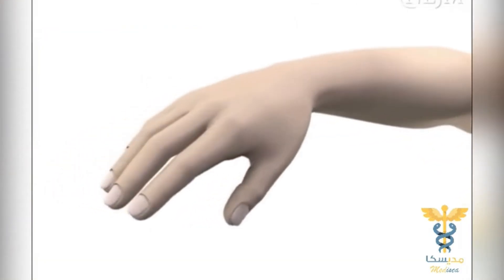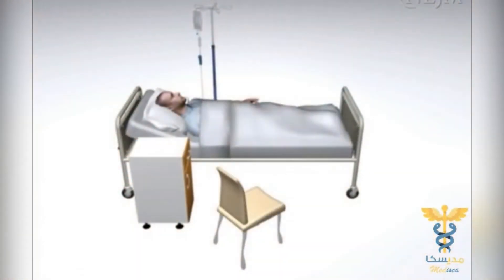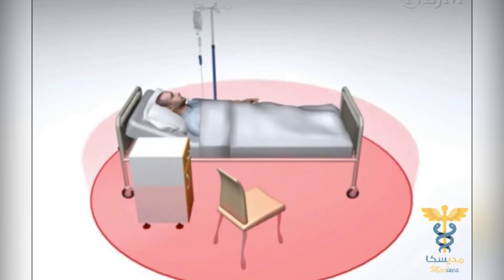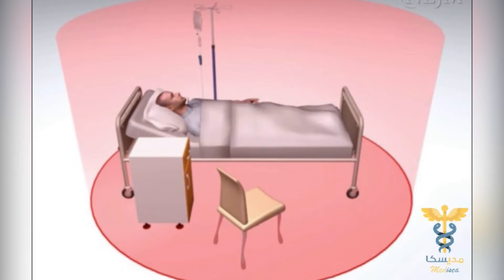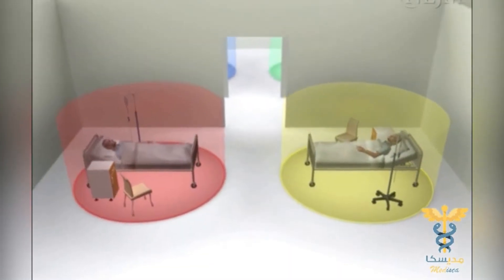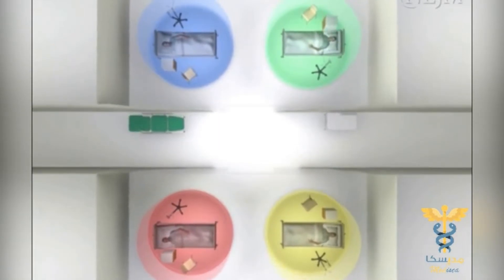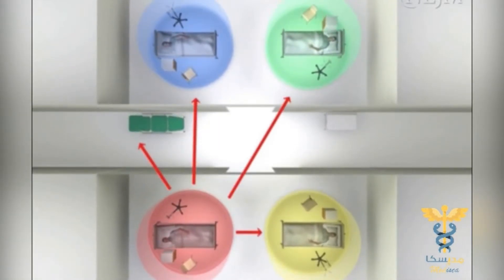The skin and mucous membranes of every human being are colonized by various microbial species. When hospitalized, patients gradually shed these microorganisms onto inanimate objects in their immediate surroundings — for example, bed linens, gowns, and bedside furniture. Patient zones consist of a patient and their immediate surroundings. As a result of contamination by both healthcare workers and patients, other areas such as corridors and public areas are also colonized, though to a lesser extent. Cross-transmission of potential pathogens from one environment to another occurs through healthcare workers' hands. Hand hygiene greatly reduces the risk of cross-transmission.